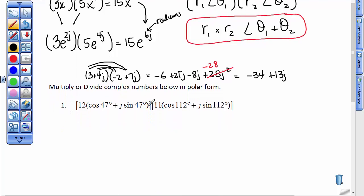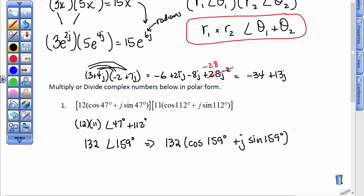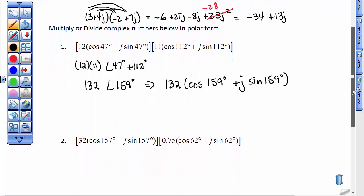But in this form, you just have to multiply the 12 times 11, so you have to multiply these r values, and the angle of 47° and 112°, you just have to add. So my answer for this is 132 at an angle of 159°. Don't forget, that's the abbreviation. What it means is 132 times the cosine of 159° plus j times the sine of 159°. So don't forget, that's what it means. But the abbreviation is perfect.